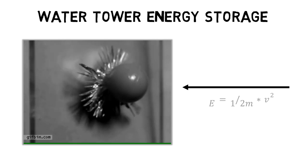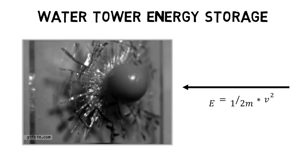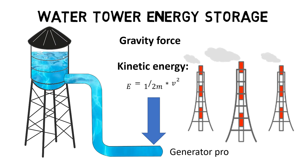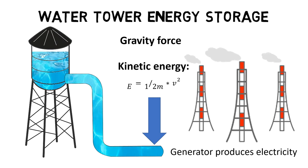If the kinetic energy of the baseball is big enough, the glass will break. The kinetic energy of the water tower is then used to operate, for example, a generator which produces electricity.